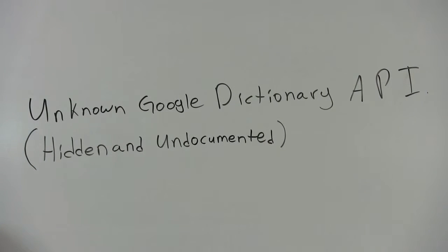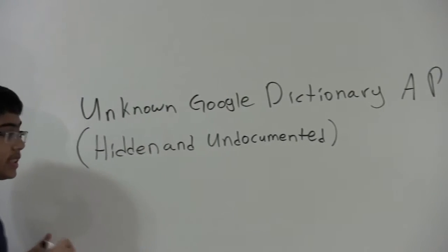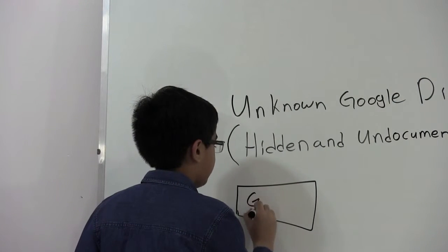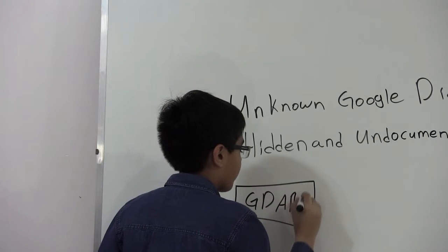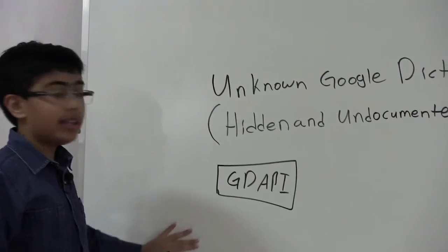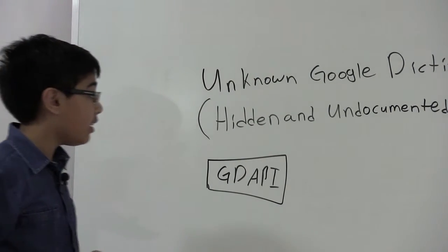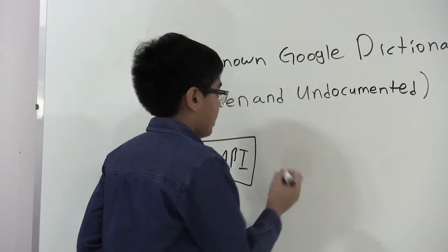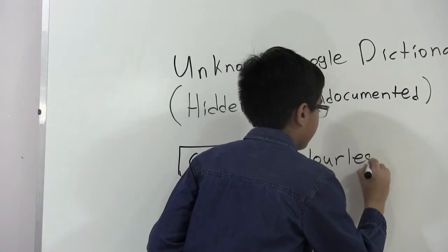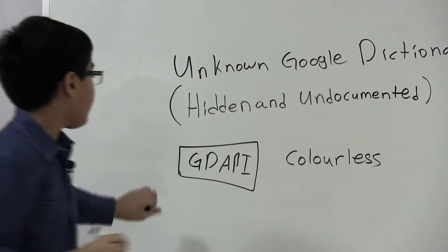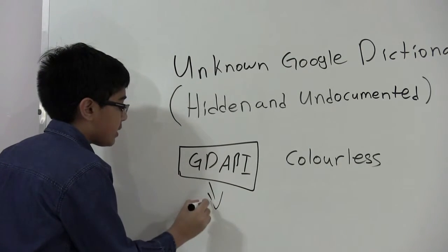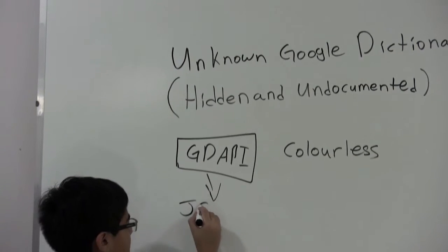What happens first is that NSData will get the contents of the URL for the Google Dictionary API — I'll call that GD API for now. So our app, let's say it asked for the meaning of something like 'colorless'. The Google Dictionary API would then return some JSON for us.